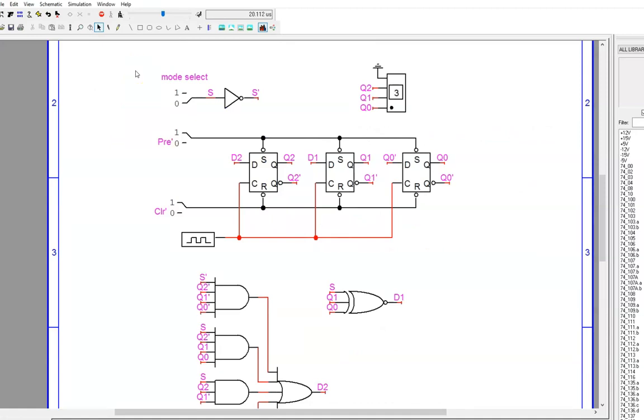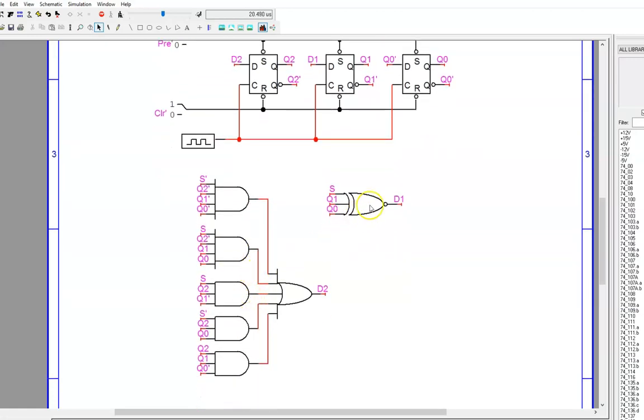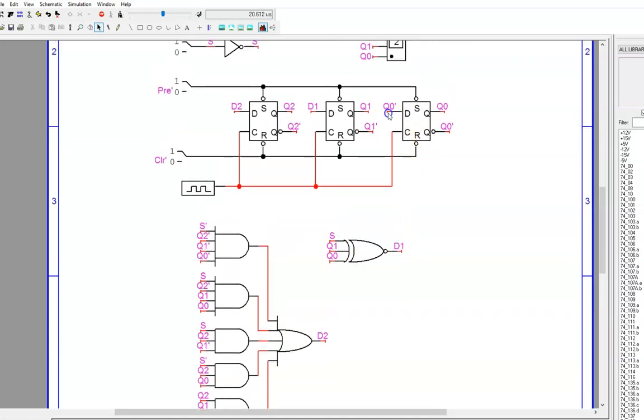Now we reach the final step of the design: building and testing. Here we see the circuit in action again. Notice the very cumbersome logic for D2, the single exclusive NOR gate for D1, and no logic gate at all for D0—just Q0 prime feeding right back around.